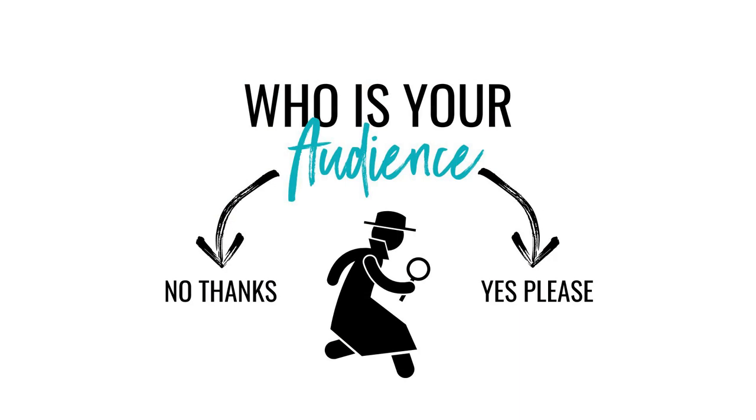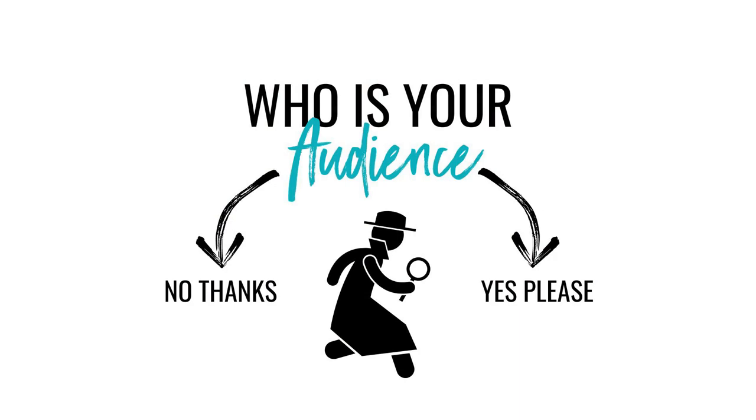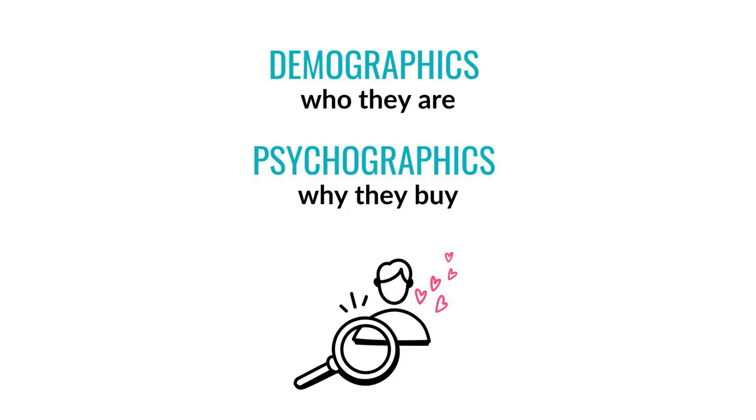Before we dive into the different types of content, let's talk about the importance of knowing your ideal audience. After all, you can't create content that will resonate with them if you don't know who they are. One of the best ways to do this is by creating an ideal customer avatar, or ICA. An ICA is a detailed representation of your ideal customer — it includes information such as demographics, interests, pain points, and goals. By understanding your ICA, you'll have a better idea of what type of content will be most relevant to them and what problems they have that you can solve.